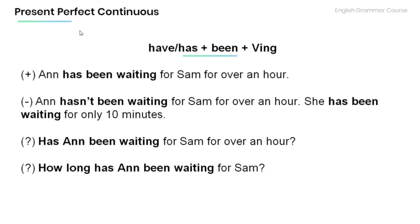To form the present perfect continuous, we use have or has plus been plus the verb-ing form. For example, positive: Ann has been waiting for Sam for over an hour. Negative: Ann hasn't been waiting for Sam for over an hour — she has been waiting for only 10 minutes. Question form: Has Ann been waiting for Sam for over an hour? How long has Ann been waiting for Sam?